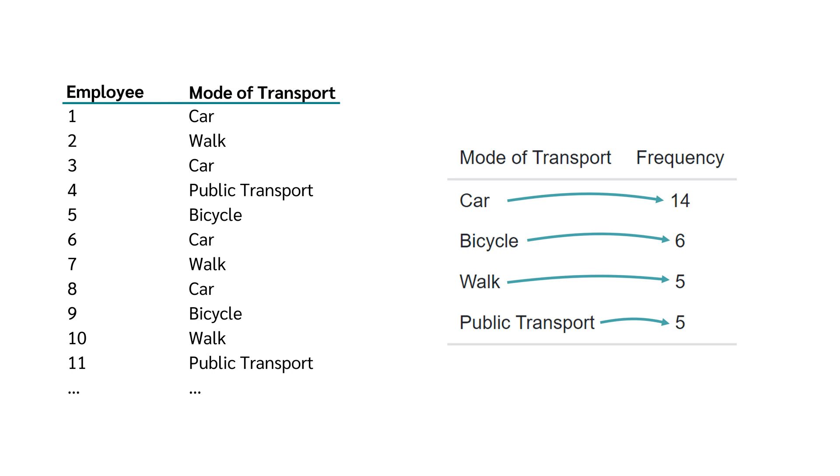From the table, it is evident that the most common mode of transport among the employees is by car, with 14 employees preferring it. The frequency table thus provides a clear and concise summary of the data.